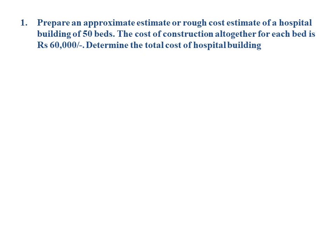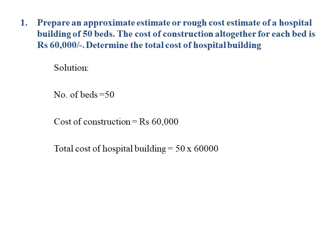Numerical number one: Prepare an approximate estimate of cost for a hospital building of 50 beds. The cost of construction for each bed is rupees 60,000. Determine the total cost of the hospital building. The hospital has 50 beds, and for each bed the construction cost is 60,000 rupees. Number of beds is 50, cost of construction is 60,000.